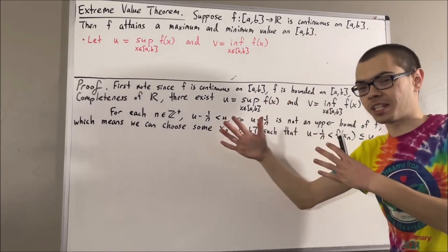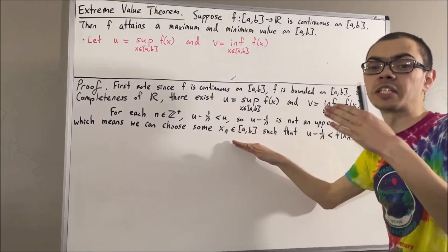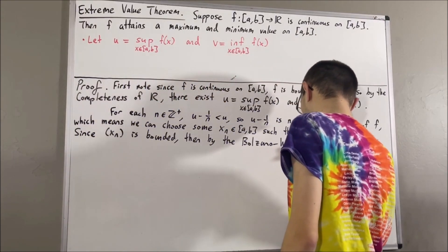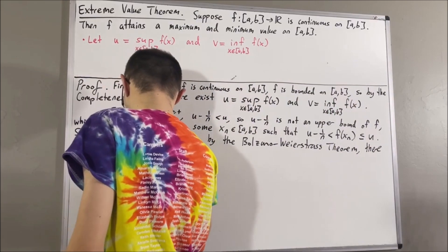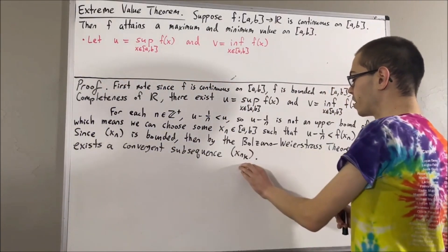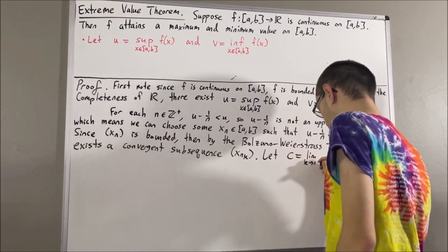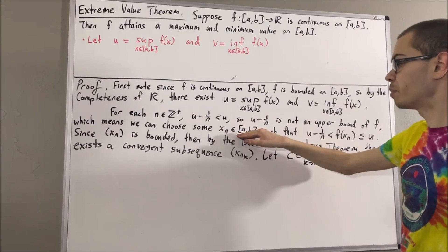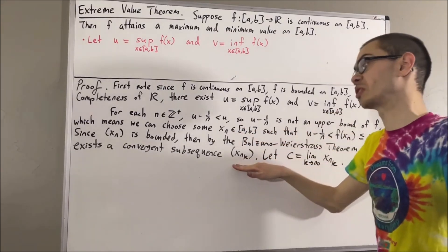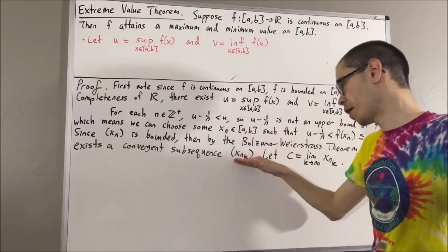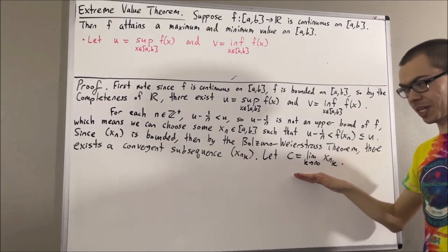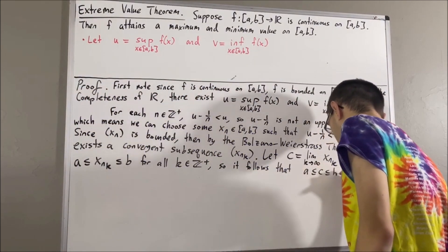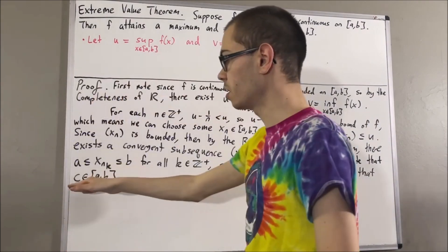Because the sequence is bounded, by the Bolzano-Weierstrass theorem it must have a convergent subsequence x_{n₁}, x_{n₂}, x_{n₃}, …, and we say the limit of this subsequence is c. We know every term of the sequence x₁, x₂, x₃, … is between a and b, so every term of the subsequence is also between a and b. It follows that the limit c is also between a and b, so c belongs to [a, b].